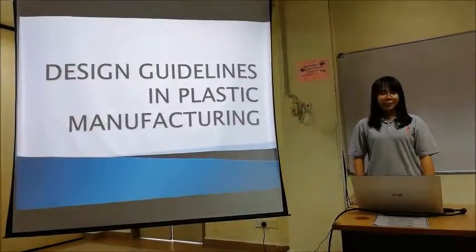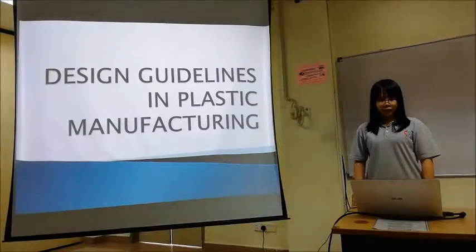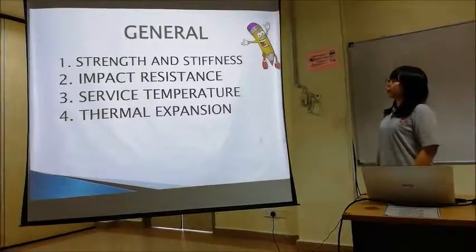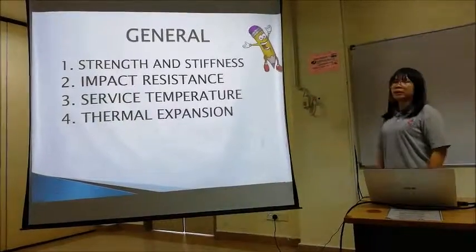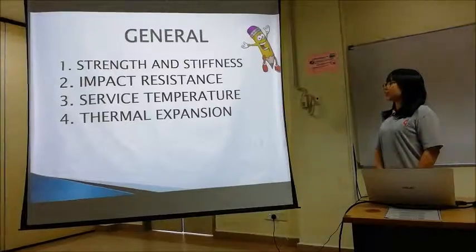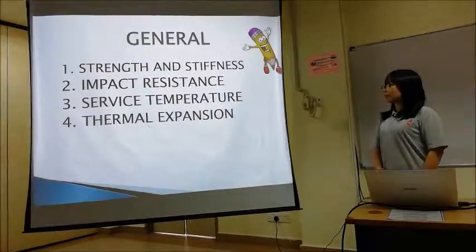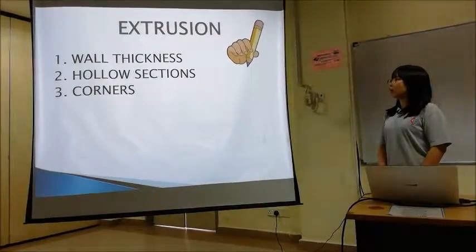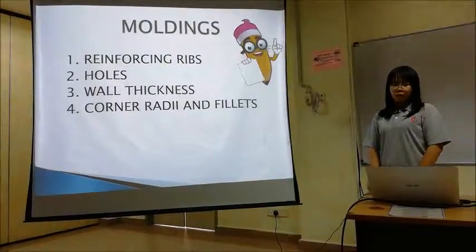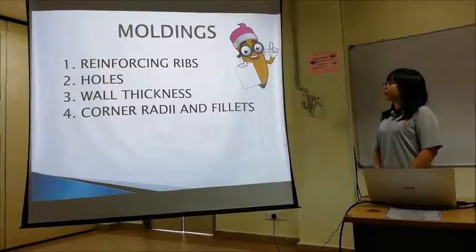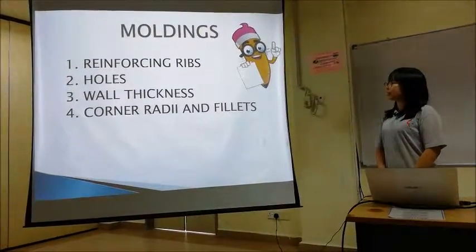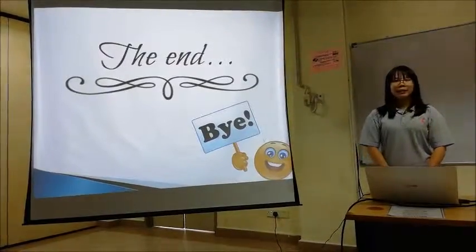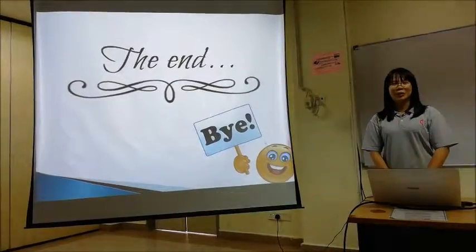At the end, there are some design guidelines that need to be followed in plastic manufacturing. For general design: strength and stiffness, impact resistance, service temperature, and thermal expansion. For extrusion: wall thickness, collocations, and corners. For mouldings: reinforcing ribs, holes, wall thickness, corner radius, and fillets. That's all for the presentation from our group. Thank you.